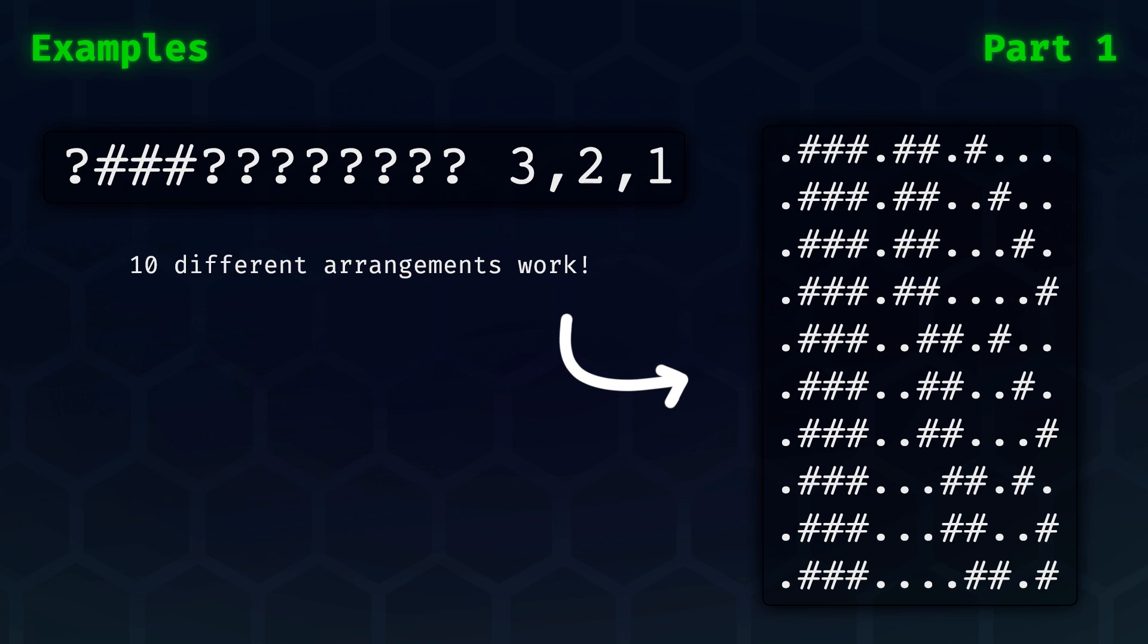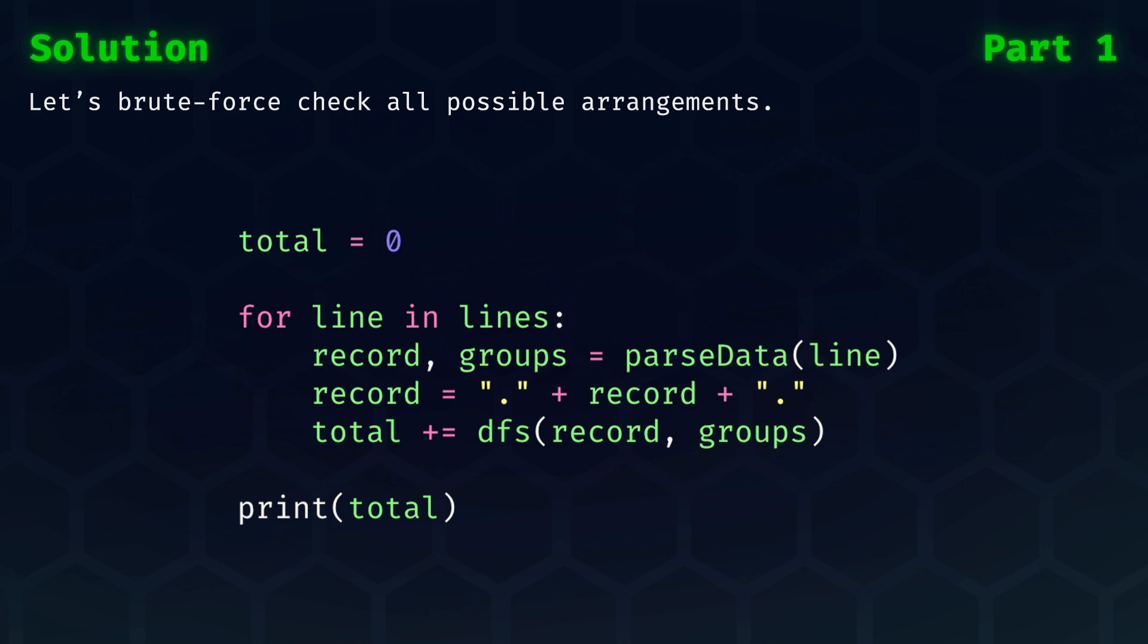Let's continue to the solution. For part one, let's do a brute force strategy to check all possible arrangements. The high-level solution outline looks as follows. We initialize our total to zero, and then we loop over all the lines of data in the input. Per line, we extract the record and the groups that need to be placed, and then we wrap the record with two additional dots. The details of why is something we'll look into later. Then finally, we'll do a recurse depth first search on the record and groups to compute the possible arrangements, which we will add to the total.